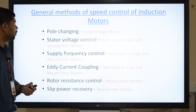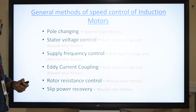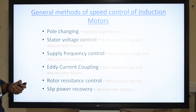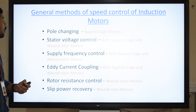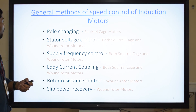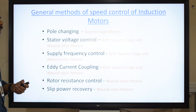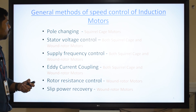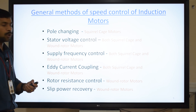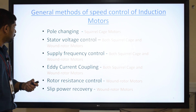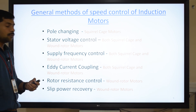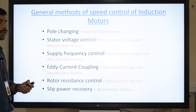There are a few methods for control of induction motor. The first one is the pole changing method, which can be used only for squirrel cage type motors. Then we have stator voltage control, supply frequency control, and eddy current control, which can be used for both squirrel cage and wound type motors. And we have rotor resistance control and slip power recovery schemes, which can be used only for wound rotor type motors.